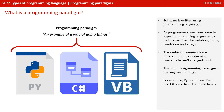Software is written using programming languages. As programmers, we've come to expect programming languages to include various facilities, like variables, loops, conditions, and arrays. The syntax or commands are a little different, but the underlying concepts don't really change very much. This is our programming paradigm — our way of doing things.